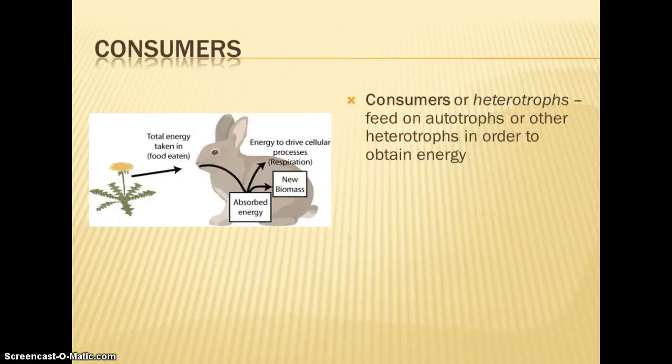Consumers are at our next trophic level, and the heterotrophs feed on the autotrophs in order to obtain their energy. They must get their energy from another source. They don't produce it themselves as the autotrophs do. Those are herbivores and carnivores. Our carnivores are going to get their energy from consuming the herbivores.